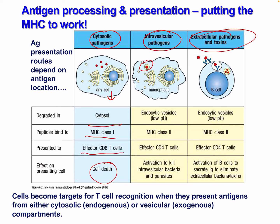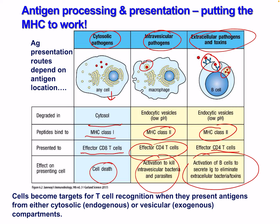We have an intravesicular pathogen — it comes in via a vesicle. These are class 2, effective CD4 T cells which cause the activation to kill extravesicular bacteria and parasites. Here's an example with a B cell: the B cell takes in the pathogen from its antibody or B cell receptor, presents it to the surface with MHC class 2, responding to CD4 T helper cells, resulting in further activation to secrete antibodies against extracellular bacteria and toxins. Cells become targets for T cell recognition when they present antigens from cytosolic (endogenous) or vesicular (exogenous) compartments, initiating T cell immunity.